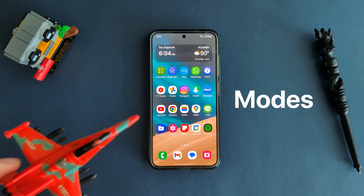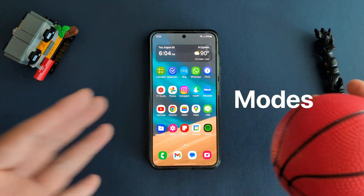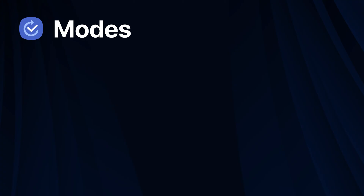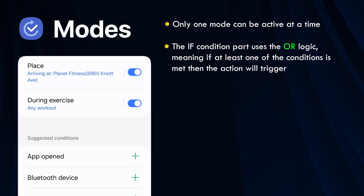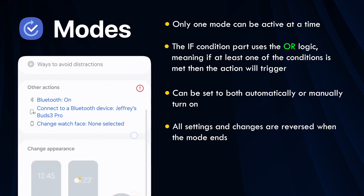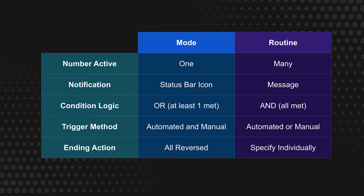So next, what are modes? You can think of modes as a general mood or scenario. For instance, what settings should be active when you are at work or sleeping? Here are the details of how modes work. Only one mode can be active at a time. The if condition part uses OR logic, meaning if at least one of the conditions is met, then the action will trigger. A mode can be set to both automatically or manually turn on. All settings and changes are reversed when the mode ends. And an active mode will appear as an icon on the top right of the status bar. To summarize everything, here's a handy table I've created to help show the differences between modes and routines.